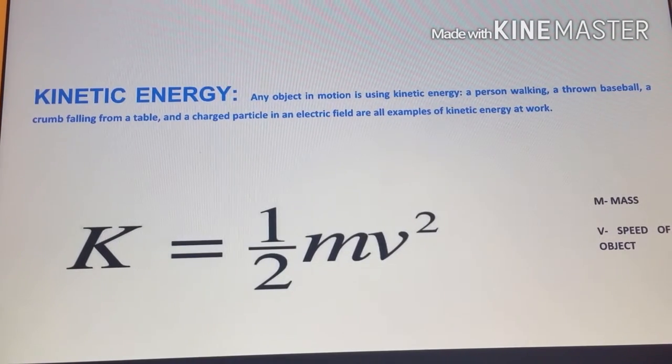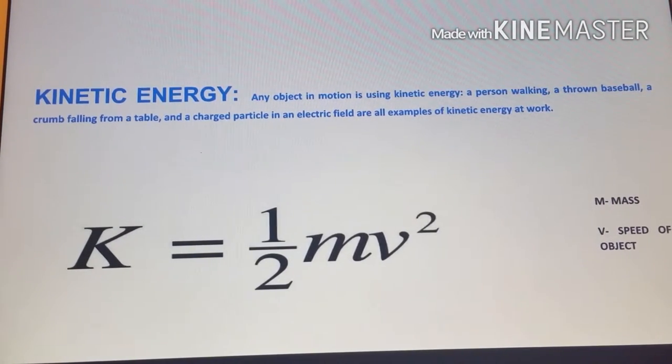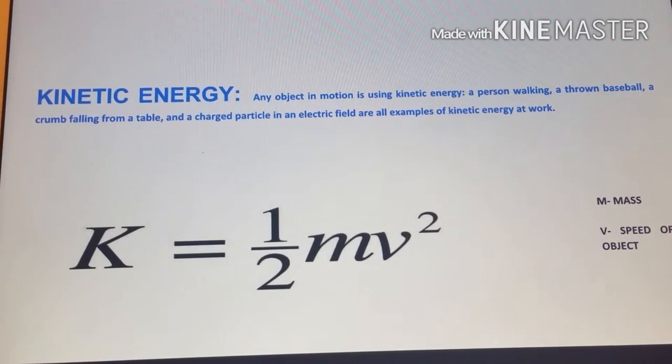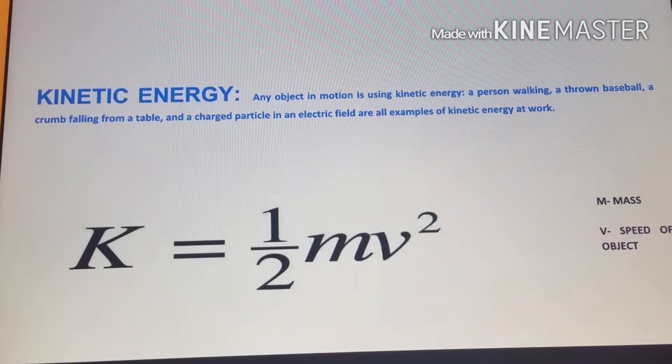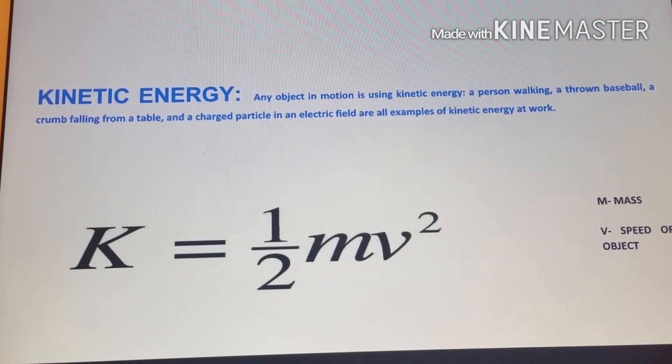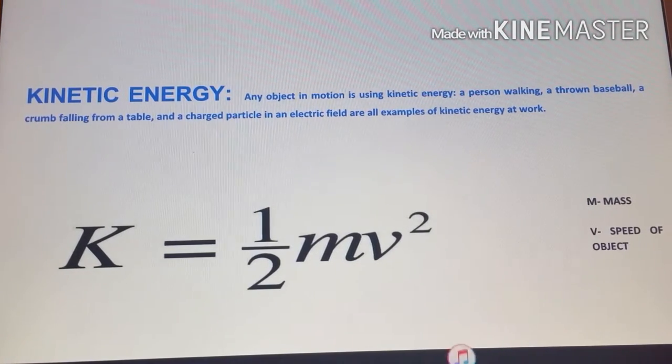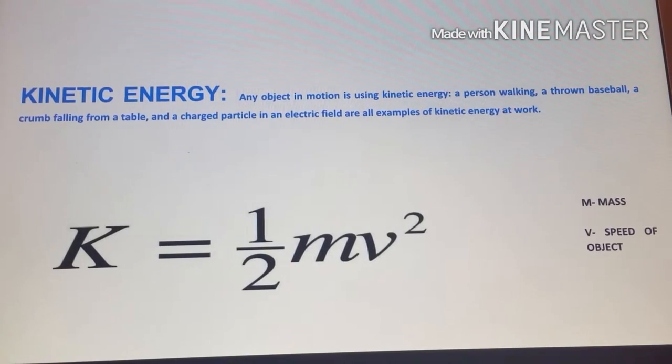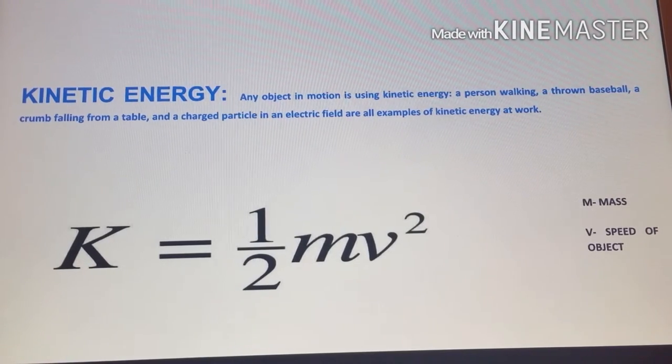Kinetic energy. Any object in motion is using kinetic energy. A person walking, a thrown baseball, a crumb falling from a table, and a charged particle in an electric field are all examples of kinetic energy at work. The formula here is the one we will be using to find kinetic energy. The M represents the mass, and the V represents the speed of object.